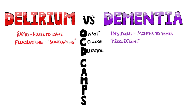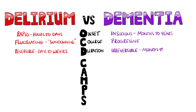Next, we have D for duration, which in delirium is mostly days to weeks and is reversible, although it can last months in causes such as liver failure. In dementia, the duration is again much longer, months or years, and in this case is irreversible.